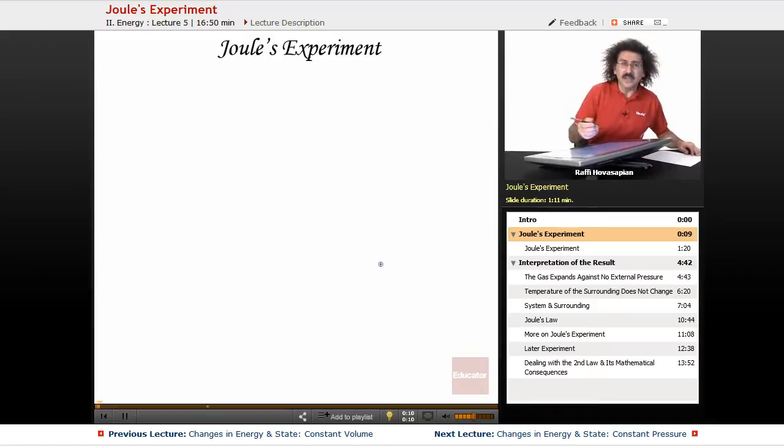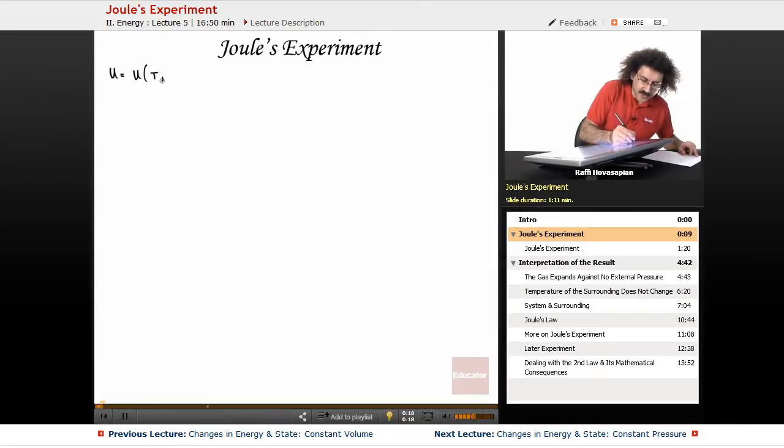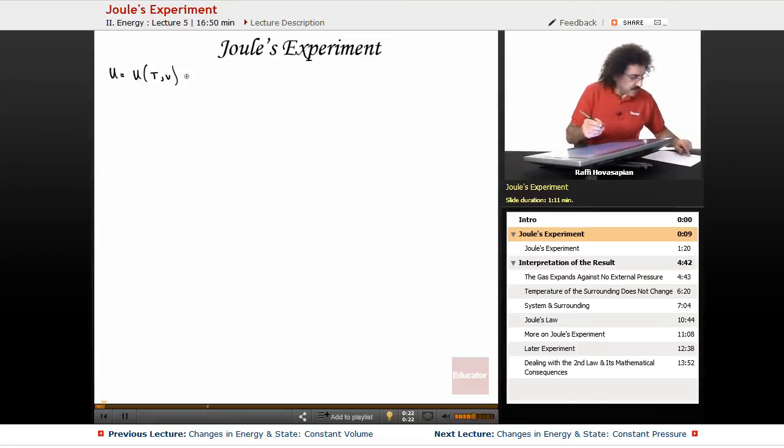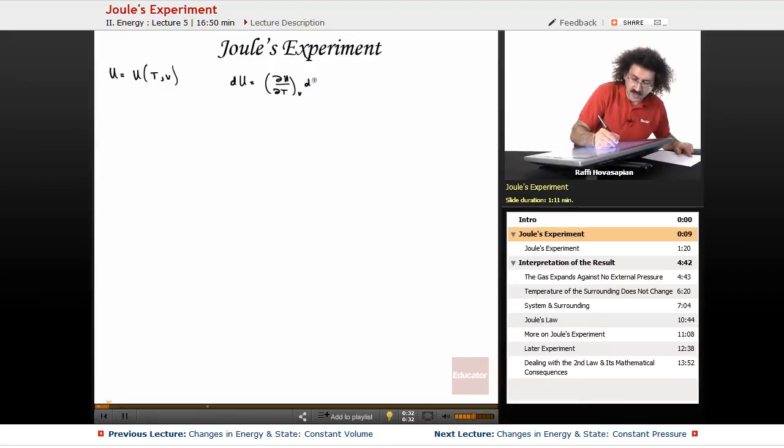Recall in the last lesson, we said that energy was a function of both temperature and volume, and we created this total differential expression: du equals (∂u/∂T)_v dT plus (∂u/∂v)_T dv.